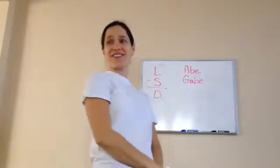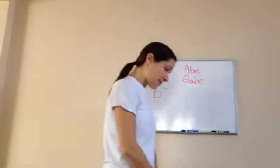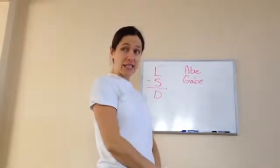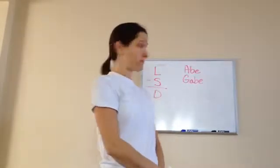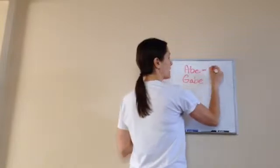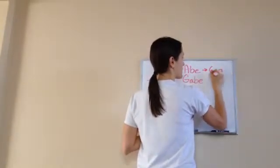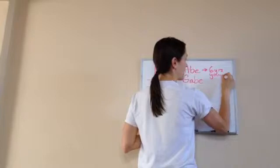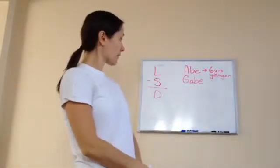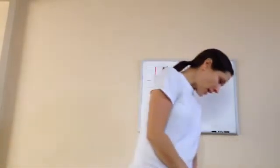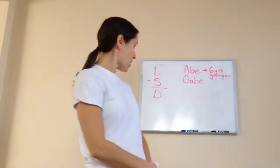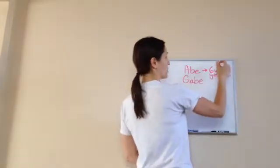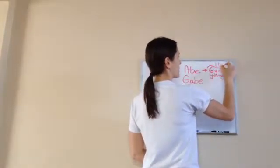Listen to this word problem. We have two brothers. One's name is Abe and the other one's name is Gabe. Abe is six years younger than his brother Gabe. Abe is also 11 years old.